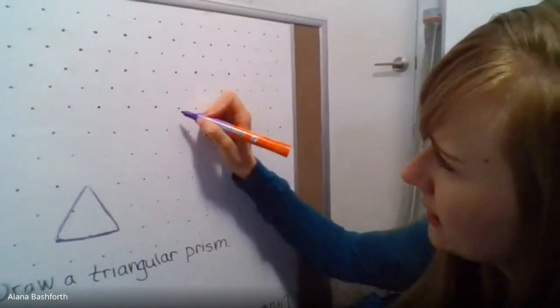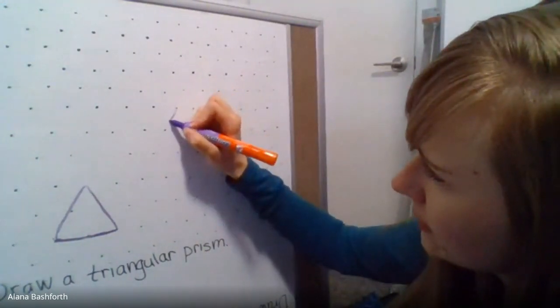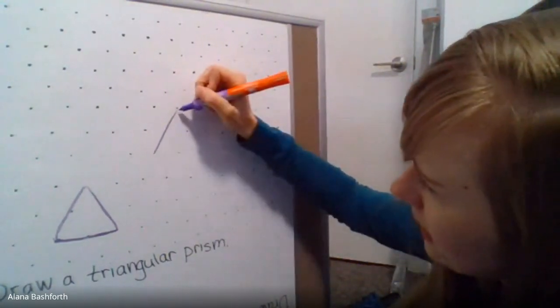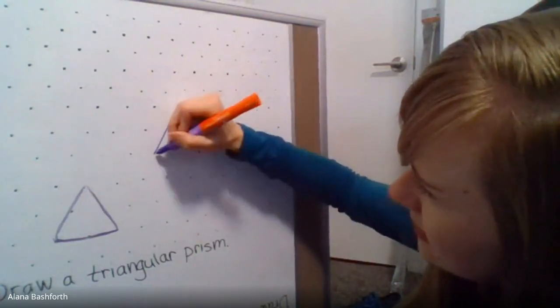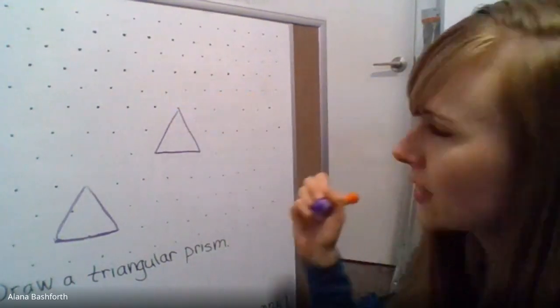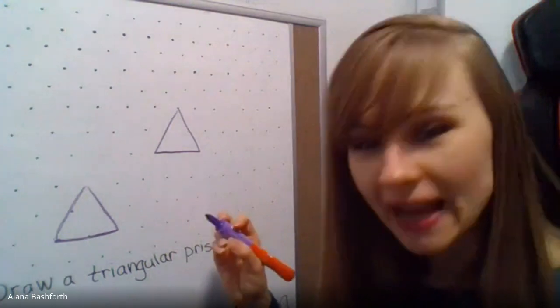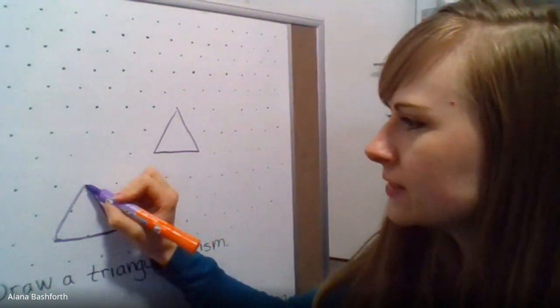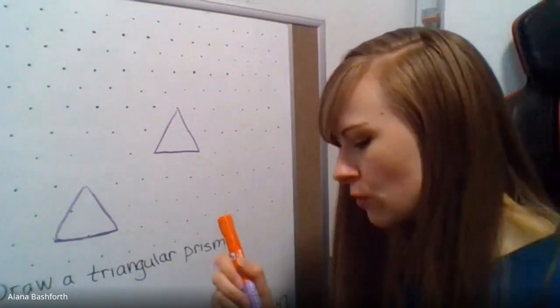I'm going to go right here. We're going to go three dots, three dots, and three dots as I try not to erase all the dots with my hand. Then we are going to connect each of the corners.